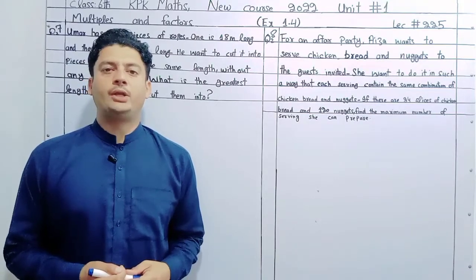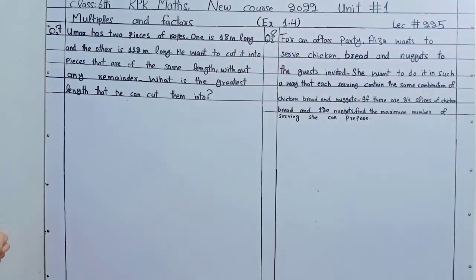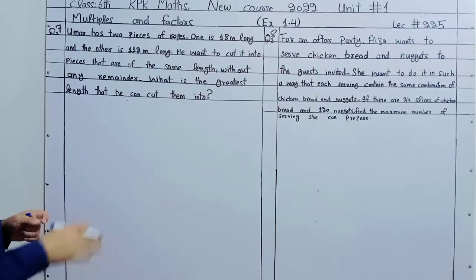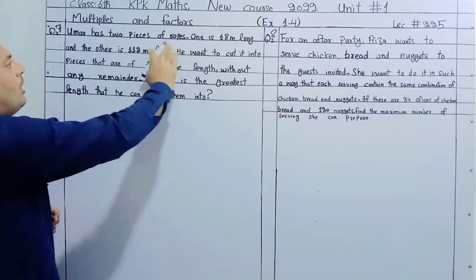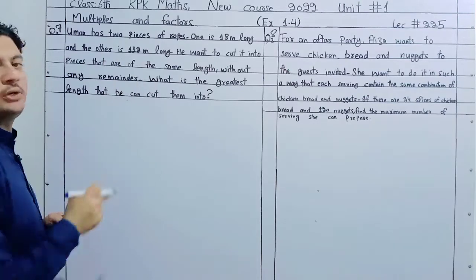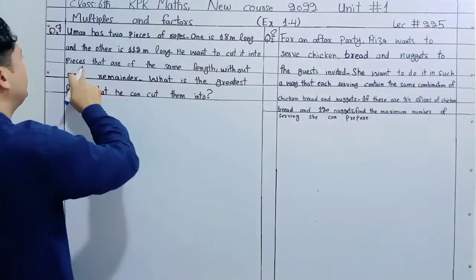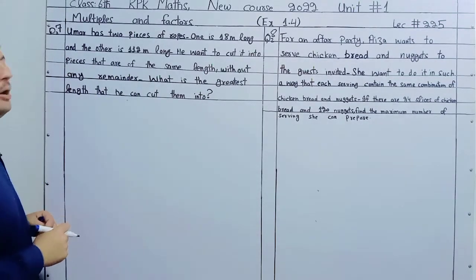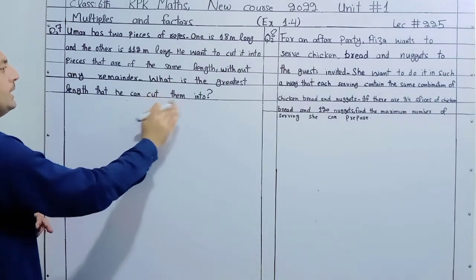Bismillahirrahmanirrahim. Starting the video on Exercise 1.4, Question Number 7. Oman has 2 pieces of ropes — one is 18 meters long and the other is 112 meters long. He wants to cut them into pieces of the same length without any remainder. What is the greatest length that he can cut them into?